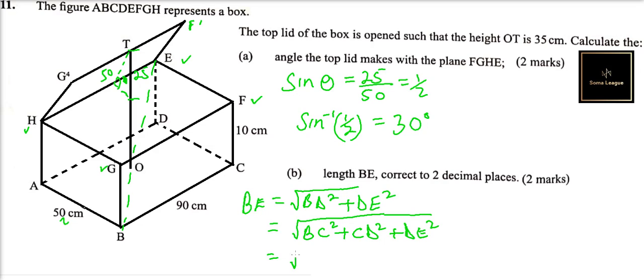So we get this is 90 squared, that is BC, plus 50 squared plus 10 squared. Using your calculator, you should be able to get that is equal to the square root of 10,700.